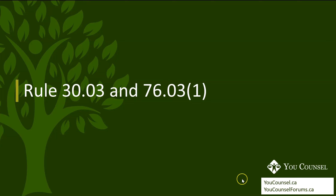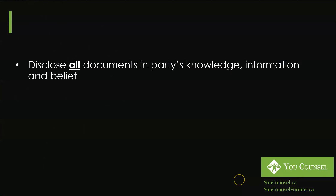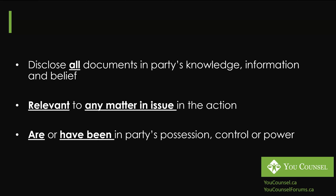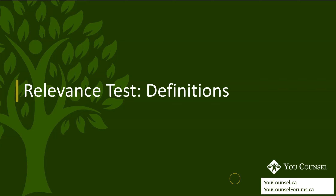We have explained that in our previous lecture — if you haven't watched it please do so before reviewing this lecture. Broadly speaking, the rules require that parties disclose all documents in parties' knowledge, information, and belief. These documents should be relevant to any matters in issue in the action and are either currently or have previously been in the parties' possession, control, or power. In today's lecture we'll talk about how you determine which document is relevant and which is not.